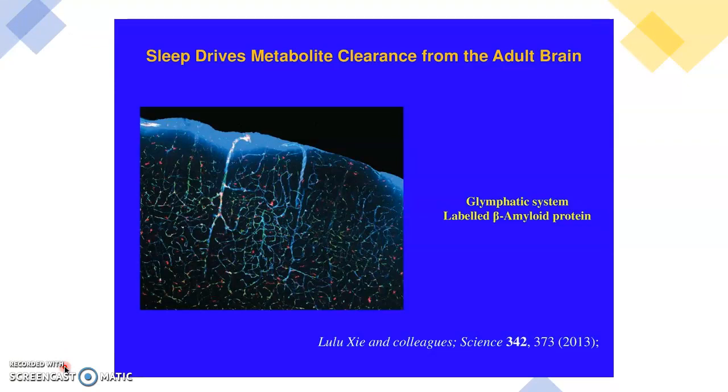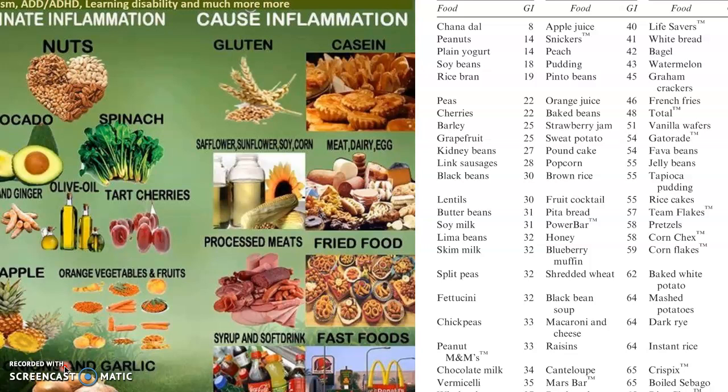I wanted to drive home the point of the glymphatic system and how important it is to get good deep sleep, enough sleep, so your brain can expand and allow cerebrospinal fluid to percolate through your brain and clean out the beta amyloid plaque, especially for everyone, but especially if you have the APOE4 allele.